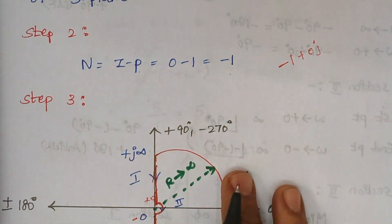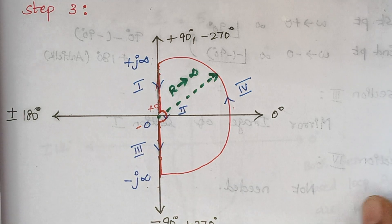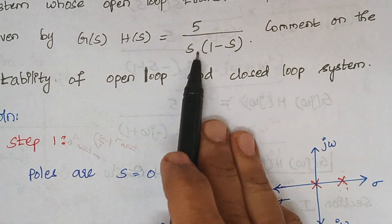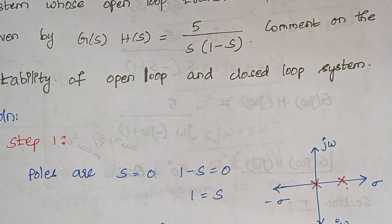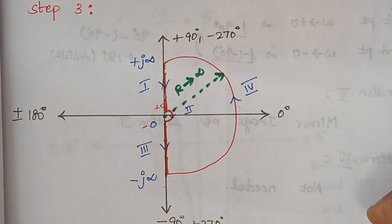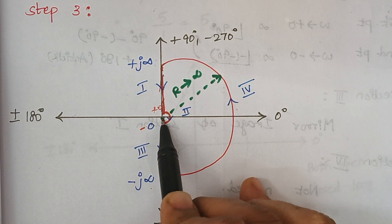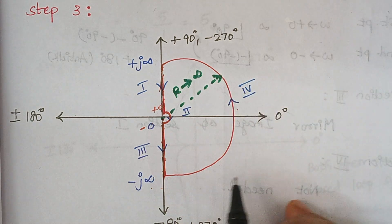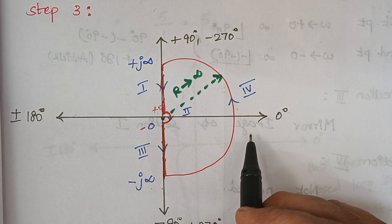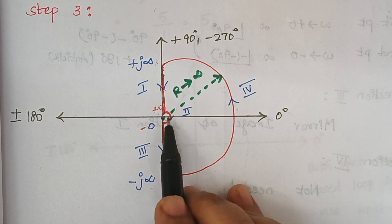Step 3 is to draw the rough Nyquist plot. Since we have a pole at the origin, the origin should not be covered, so the Nyquist contour must detour around it. This plot has 4 different sections. Section 1 starts at plus infinity and ends at plus 0.